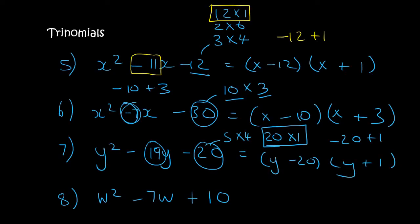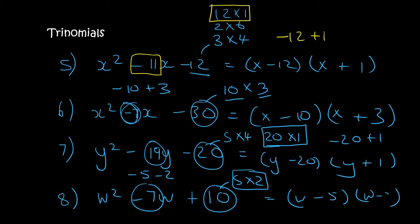Looking at the number 10, that's 5 times 2. I can stop straight away because 5 and 2 does make minus 7 by saying minus 5 minus 2. So I open up two brackets and say w and w, and minus 5 minus 2.